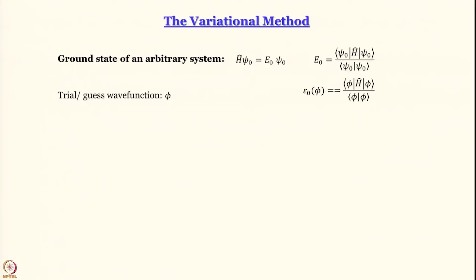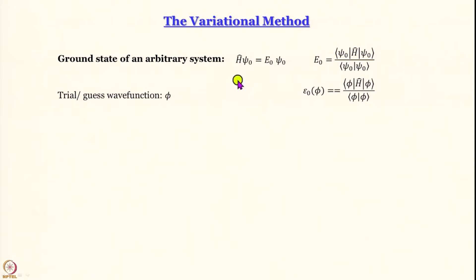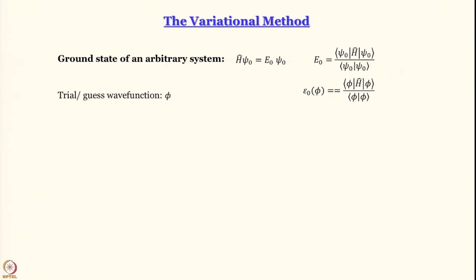I hope we are now all very familiar with the variational method. What we do here is try to develop a description of the ground state of an arbitrary system — a system for which the Schrödinger equation cannot be solved exactly, but you can write the Schrödinger equation. You can usually work out the Hamiltonian and write H psi_0 = E psi_0, and the expectation value of ground state energy is the integral of psi_0* H psi_0 over all function space divided by the integral of psi_0* psi_0, where the denominator is 1 for normalized wave functions.